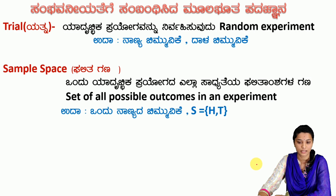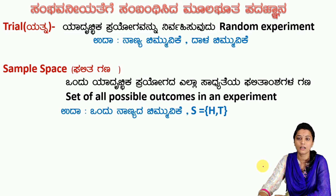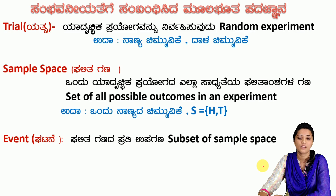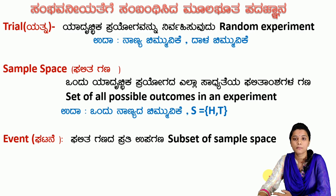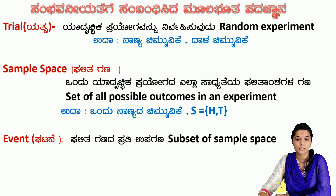We are going to toss a coin. When we toss a coin, the outcome will be either head or tail. Next, event. An event is nothing but a subset of the sample space.